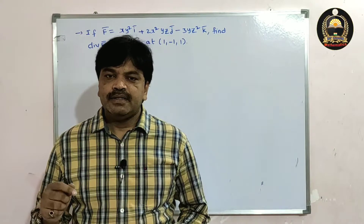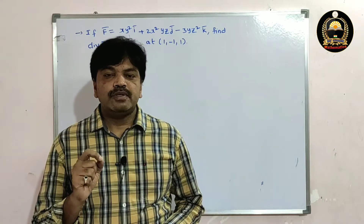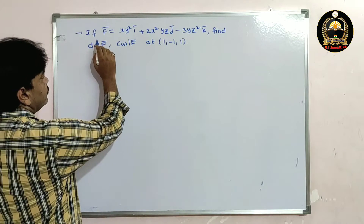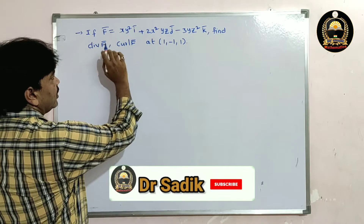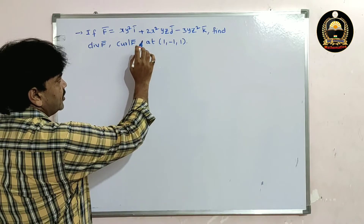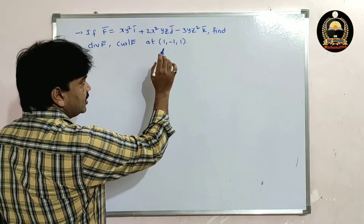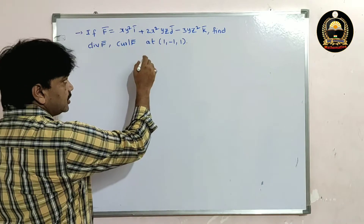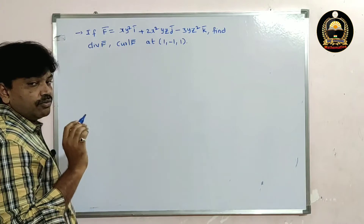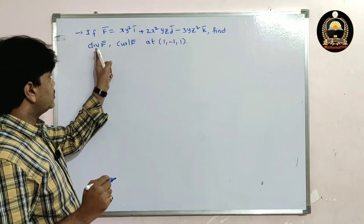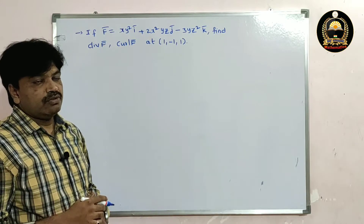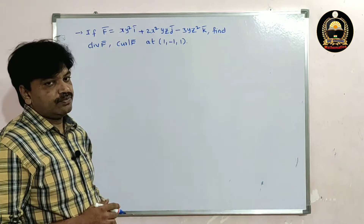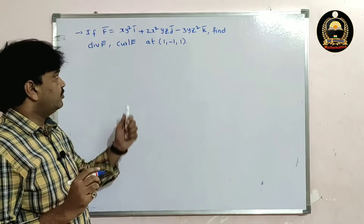Good morning friends. In this lecture I'm going to solve a problem on divergence and curl. The problem is: if f̄ = xy²ī + 2x²yzj̄ - 3yz²k̄, find div f̄ and curl f̄ at the point (1, -1, 1). By using the formula we can easily find divergence and curl of f̄.